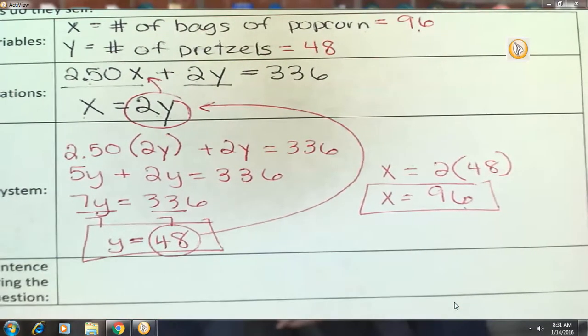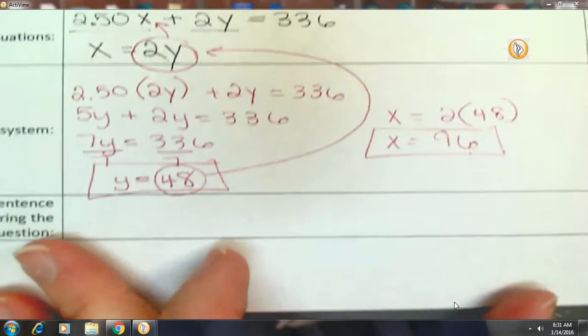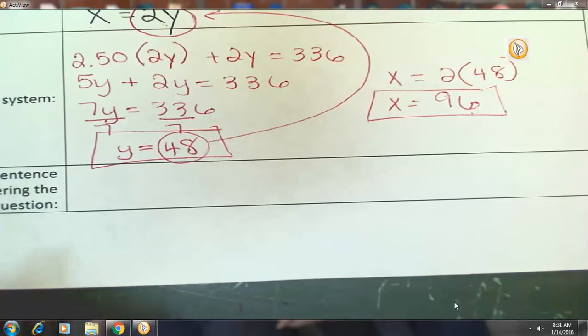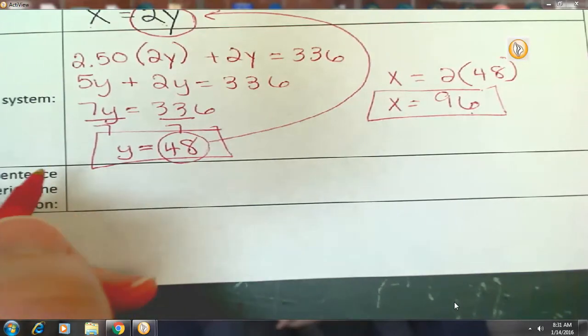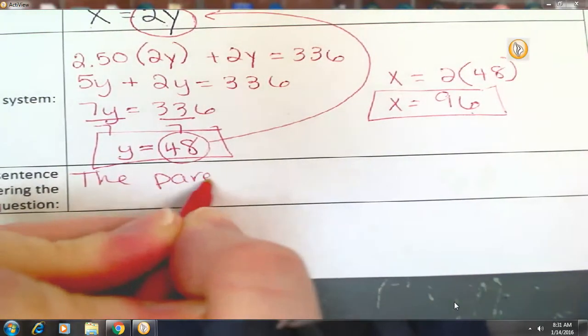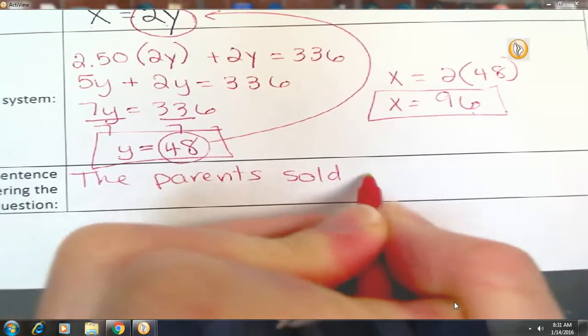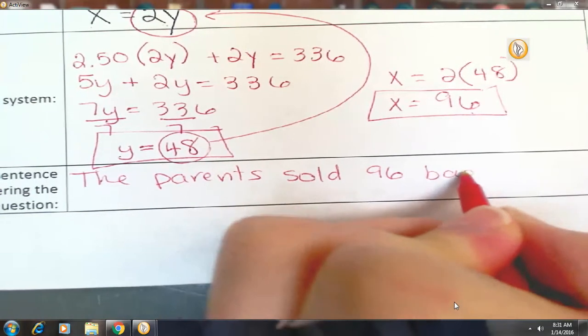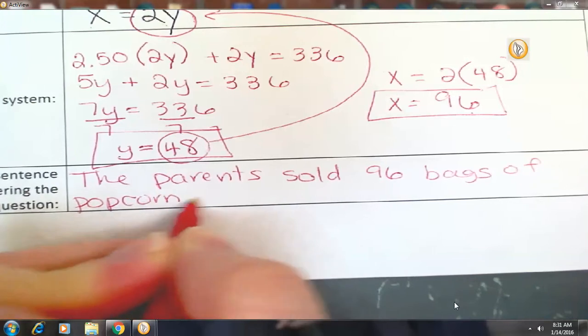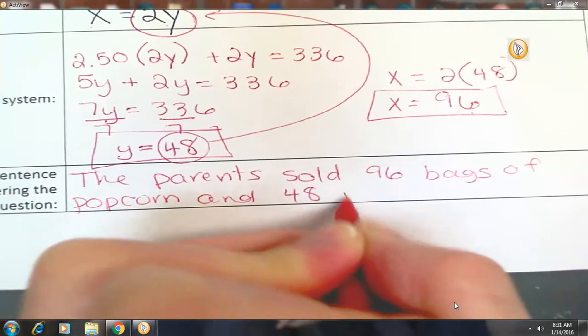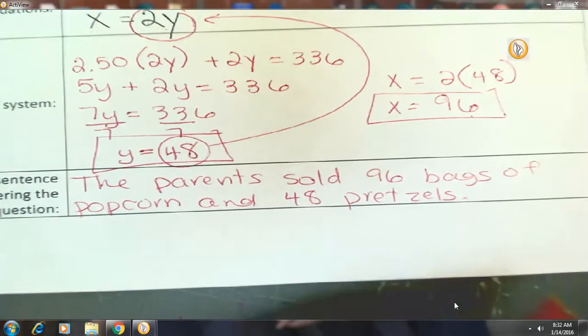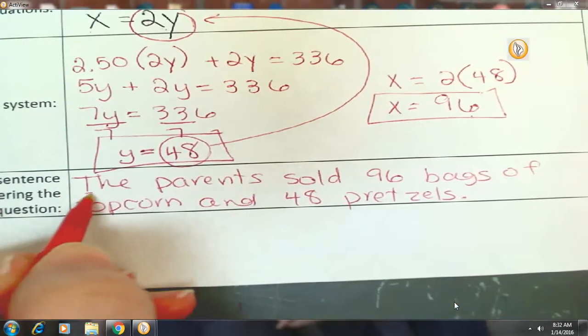Let's write our sentence. Remember when you write a sentence, I do want it to be a complete sentence. Let's answer the question, how many bags of popcorn did they sell? How many pretzels did they sell? The parents sold 96 bags of popcorn and 48 pretzels. Make sure you start your sentence with a capital letter. Make sure you end it with a period.